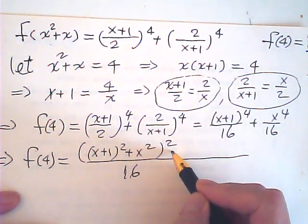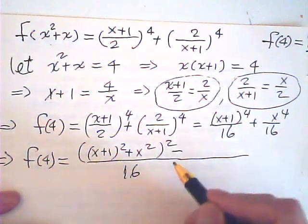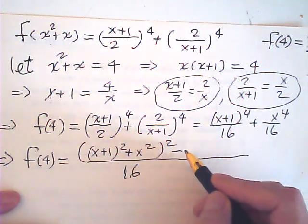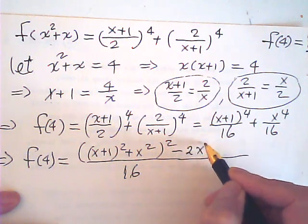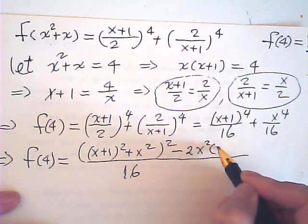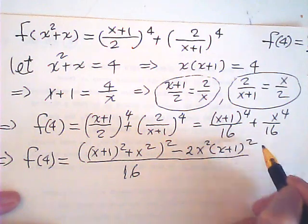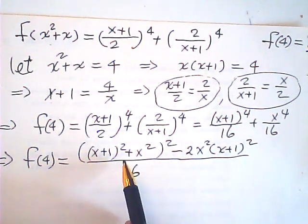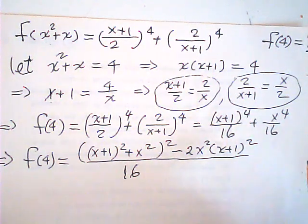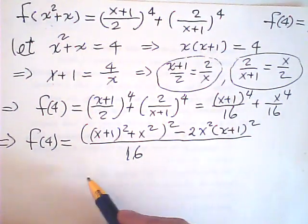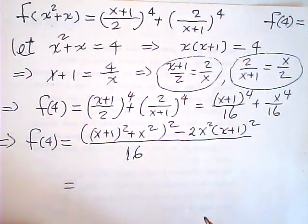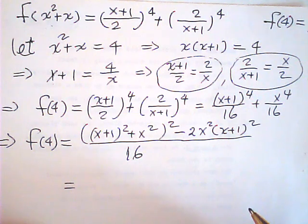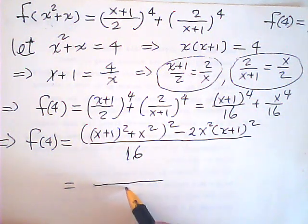The midterm is, I have to take out the midterm, minus 2x square times (x plus 1) over (x plus 1) square. So I cancel the midterm. Then this one is equal to 1 over 16.